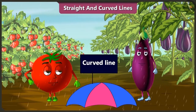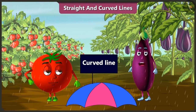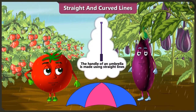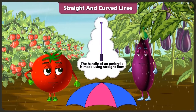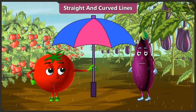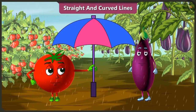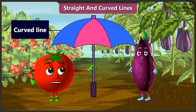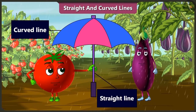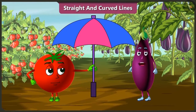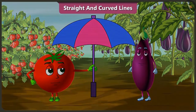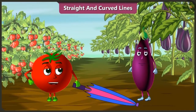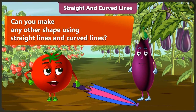Does an umbrella only have curved lines? Think. Look, there are only curved lines in an umbrella. Didn't you notice? The handle of an umbrella is made using straight line. You are right. This straight line becomes the handle of this umbrella. Yes, now you did it right. The umbrella is made using both curved and straight lines. Tingu, I think the rain has stopped. Yes, but we will keep the umbrella with us. We don't know when we would need it. You are right. Bingu, can we make any other shape using straight and curved lines like we made an umbrella?